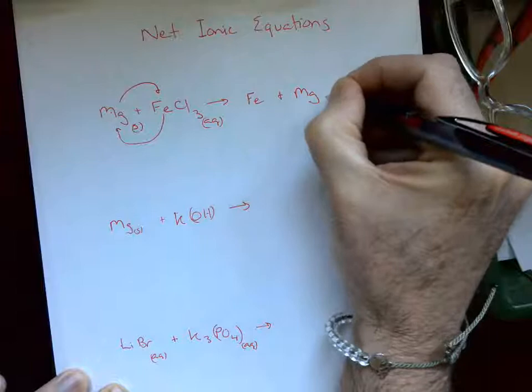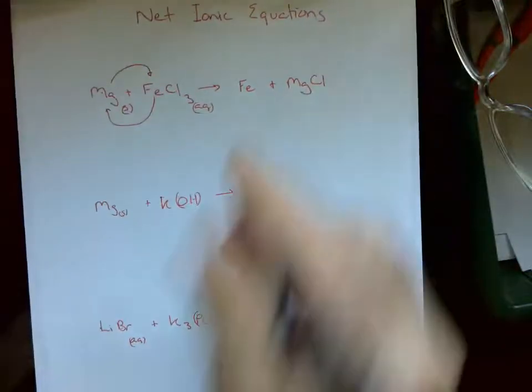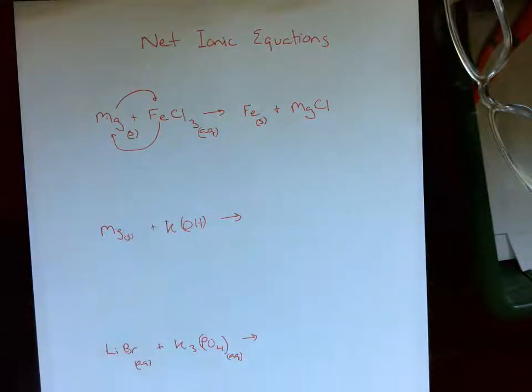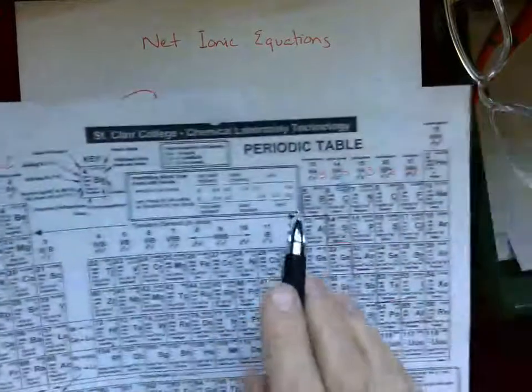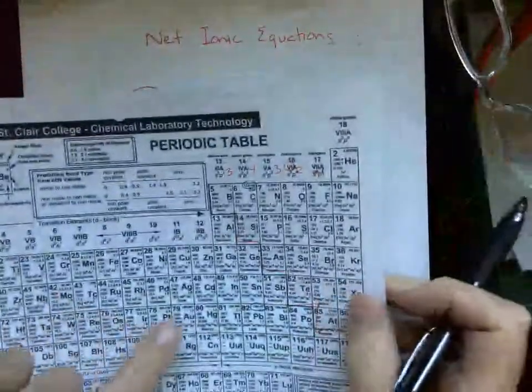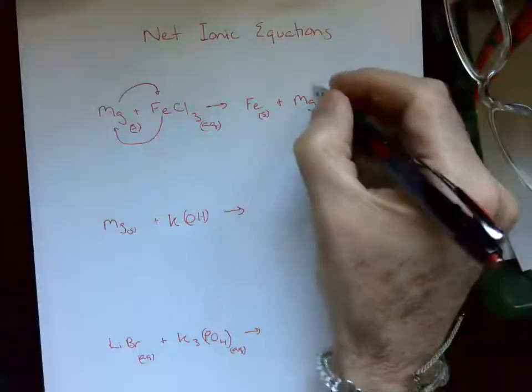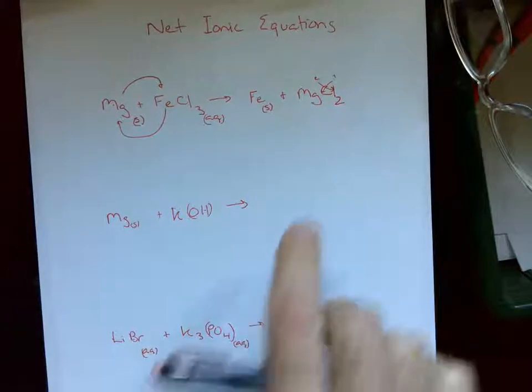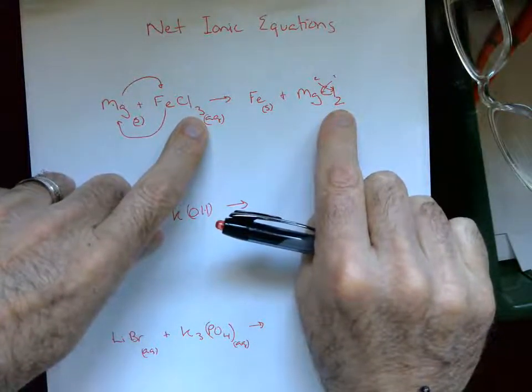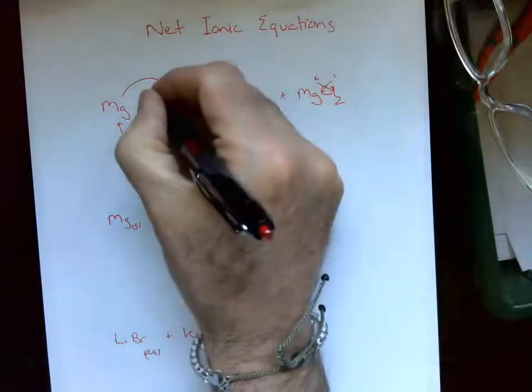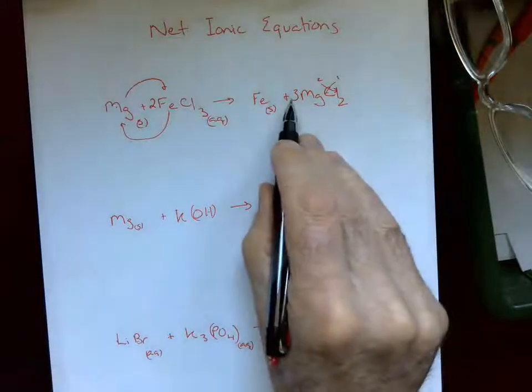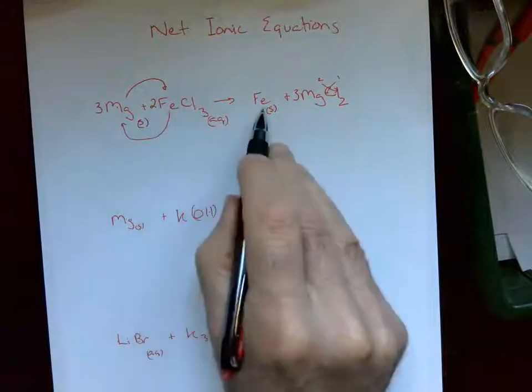So these two switch places. Don't write any numbers in yet. If it's an element on its own, it's just going to be a solid. If it's a molecule, you've got to go to the crossover numbers: 1, 2, 3, 4, 3, 2, 1. For magnesium, the crossover number is 2. For chlorine, it's 1. We cross them over and it becomes MgCl2. Now we have to balance. This is tricky because we've got an odd number on one side and even on the other. Double the odd number, put a 2 out front. That's 6 chlorines. Put a 3 here to get 6. 3 Mg's, 3 Mg's, 2 Fe's, 2 Fe's.